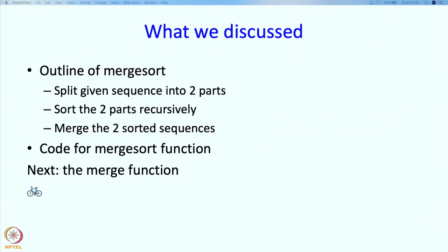Alright. What have we discussed? We have discussed the outline of merge sort, and this consists of: split the given sequence into 2 parts, sort the 2 parts recursively, and merge the 2 sorted sequences. Then we also discussed the code for the merge sort function, and what remains to discuss is the merge function. That we are going to discuss in the next segment. We will take a quick break.